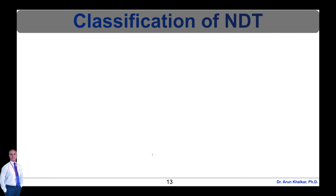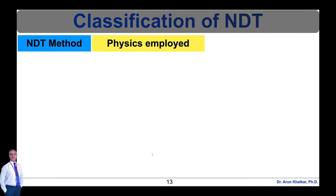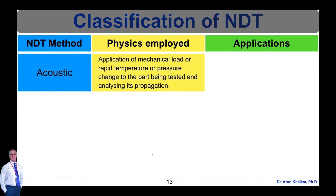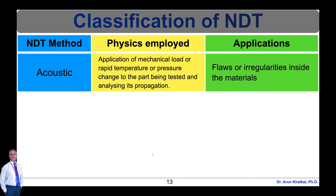Now let's see the classification of NDT methods. Non-destructive testing is based on interrelation between a physical field or a substance and a tested object. First is the acoustic method. Application of mechanical load or rapid temperature or pressure change to the part being tested and analyzing its propagation is the physics employed. Applications include detection of flaws or irregularities inside the materials.